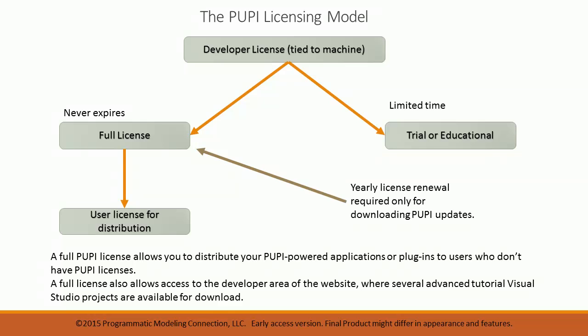Puppy has a flexible, no-hassle licensing process. A trial or full license can be activated when installing Puppy. Licenses are easily upgraded with our License Manager application. Developers with full licenses can distribute Puppy software to users who don't have Puppy licenses. Free licenses are available for students with valid .edu email addresses.